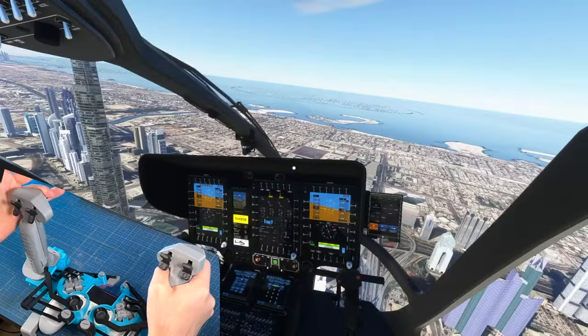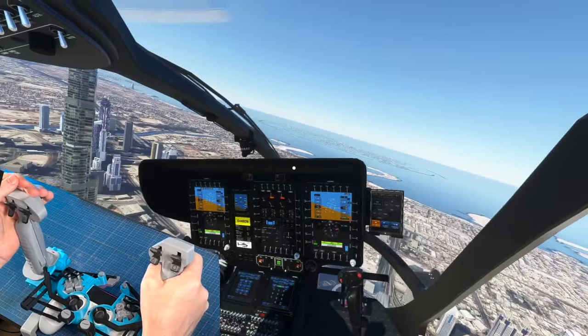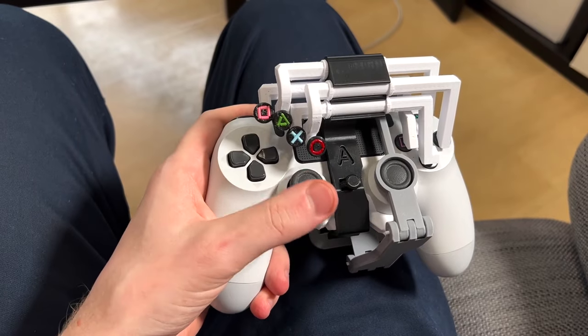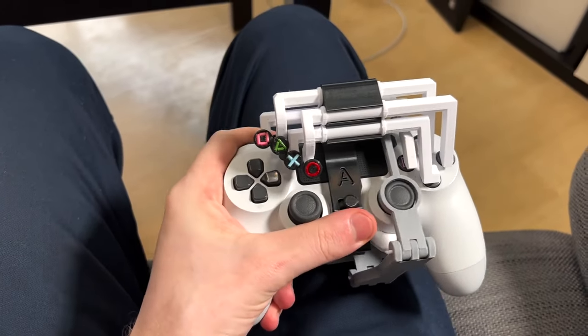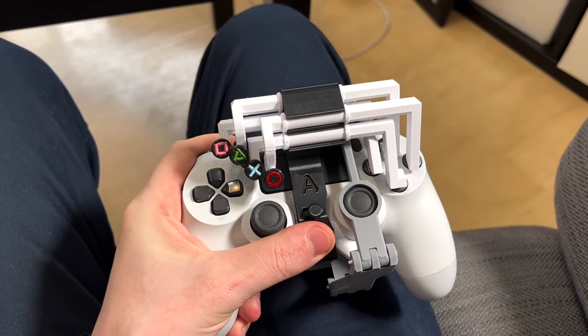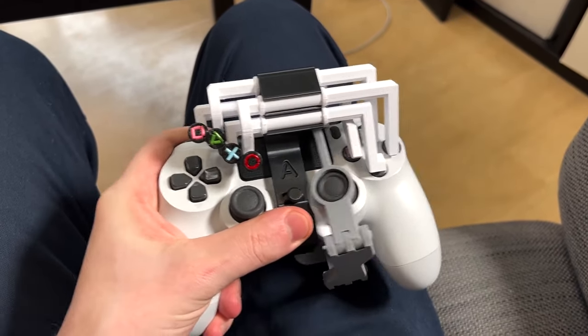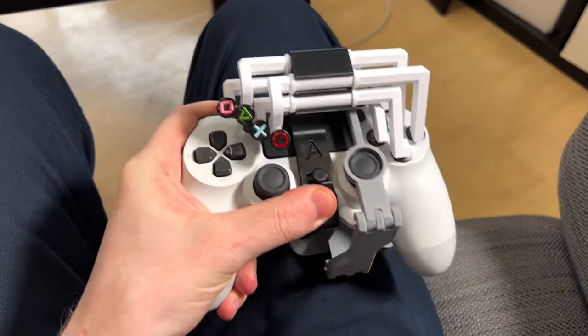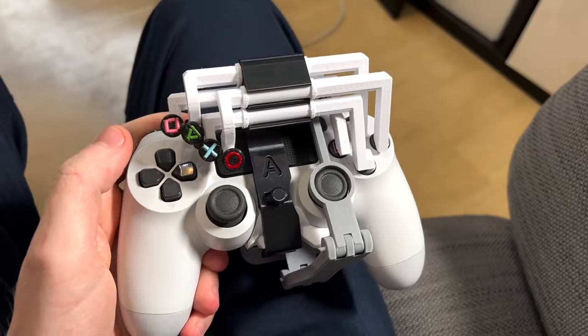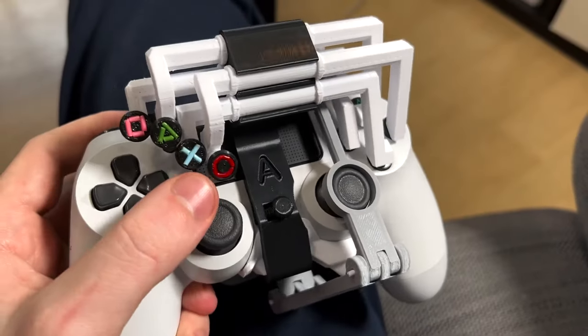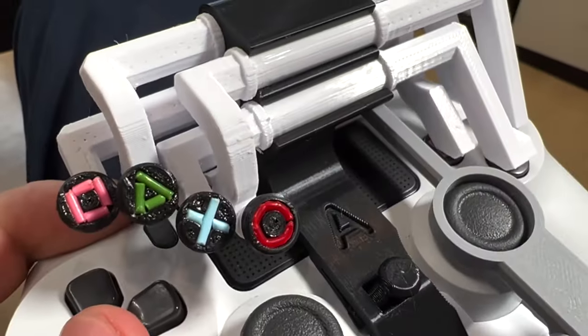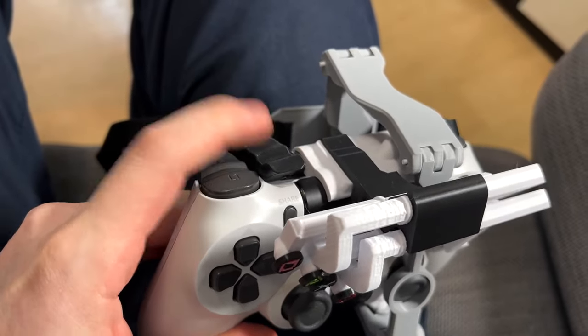We've featured a handful of Akaki Kuumeri's 3D printed controller designs before, but this is something different. This is a one-handed adapter for the PlayStation 4 and 5 controllers to make them more accessible. The alternate analog stick is controlled by moving the entire controller while this leg band secures it to your leg. There's a set of buttons that work through linkages to press the buttons on the opposite side, and the triggers work in a similar fashion.